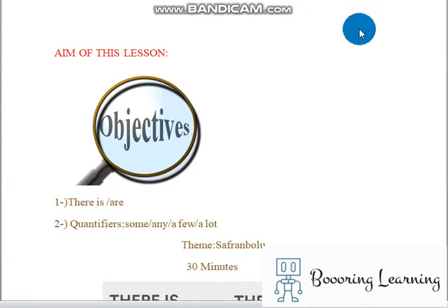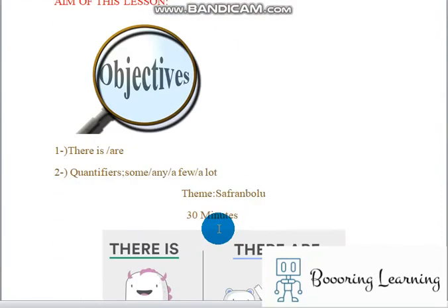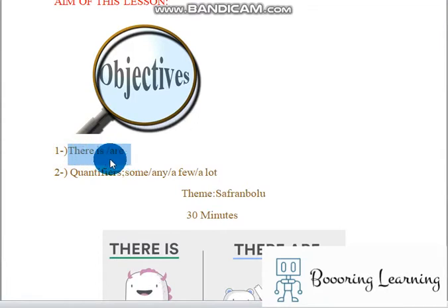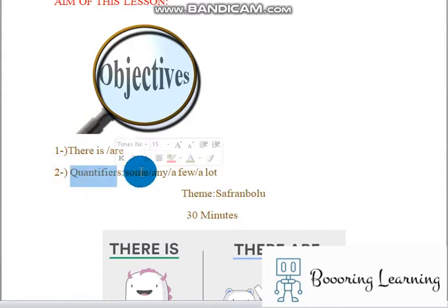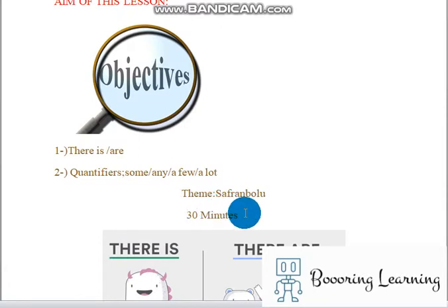Hi, hello, welcome to this online lesson. The aim of this lesson is learning two aspects of English: there is and there are. We will look at some examples regarding these sentences and we will also learn about quantifiers such as some, any, a few, and a lot. We will use Safranbolu, which is a county of Karabük. This lesson will approximately take 30 minutes.